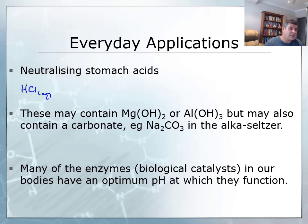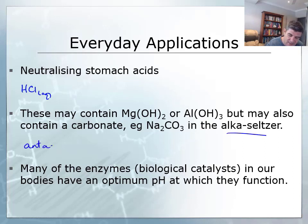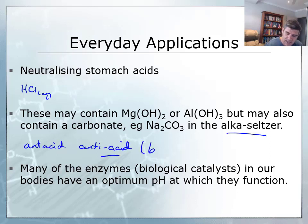Sometimes this acid can be secreted at the wrong time, or the foods we consume cause acid levels to get very high. To control or regulate this, we need a substance that will neutralize that acid — which is why we take something known as an antacid. Think of it as an anti-acid: something that counteracts the effect of an acid. An antacid is a base, and when it reacts with the acid it neutralizes it to form water.